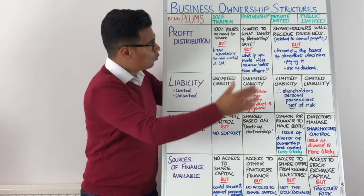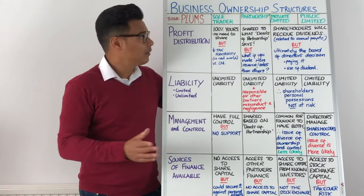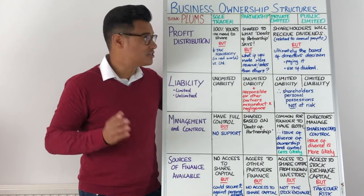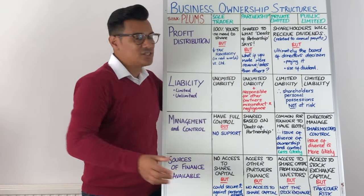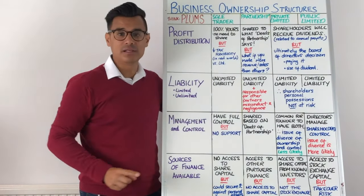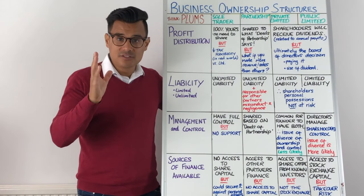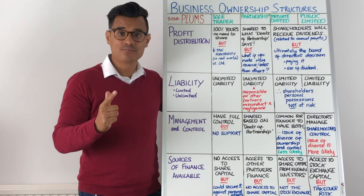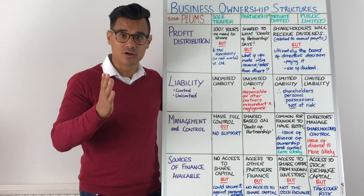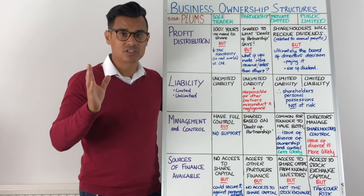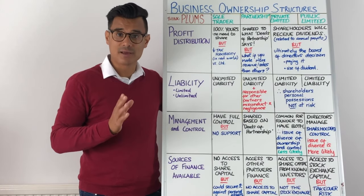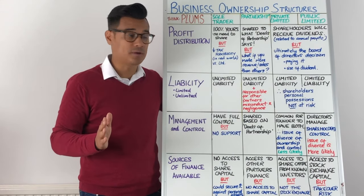Profit Distribution for private and public limited companies — shareholders in companies, private or public, will receive dividends, and they relate to the annual profits. But ultimately whether dividends are paid, and the size of them, is at the discretion of the board of directors. So while they're approximately related to annual profits, it's up to the board of directors to decide if they're paid and how much dividends will be.